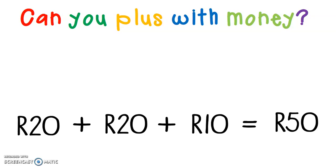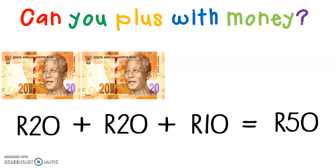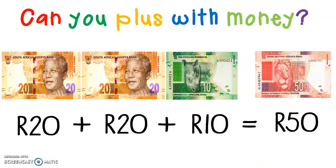Now I've got 20 Rand plus 20 Rand plus 10 Rand equals 50 Rand. What notes will I need? It's a 20 Rand note, plus a 20 Rand note, and now I'm going to add a 10 Rand note. Plus a 10 Rand note equals 50 Rand. So 50 Rand can be divided up into 2 20 Rand notes and 1 10 Rand note. Did you know a 50 Rand can also be divided into 5 10 Rand notes?